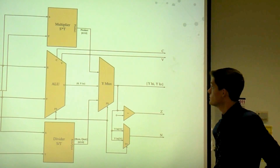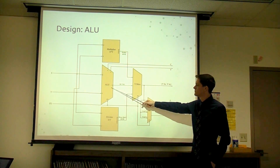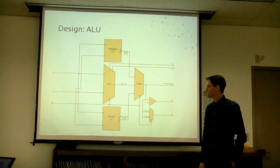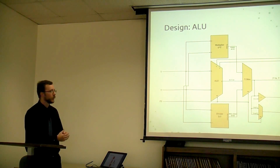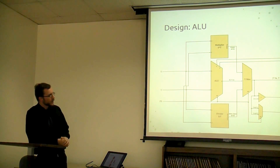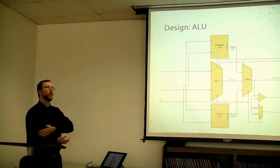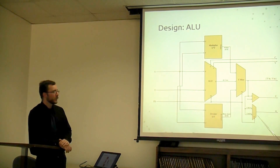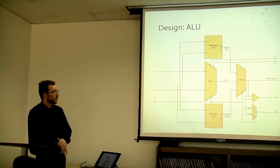The primary ALU contains a multiplier, a regular ALU for adds, subtracts, set less than, and a divider. All get fed into a mux, and based on the function we're doing, we choose the appropriate value. The zero flag tests if the entire result is equal to zero — for a multiplier, it tests the full 64-bit product. The negative flag tests the 31st bit for the ALU, or the 64th bit for the divider or multiplier.